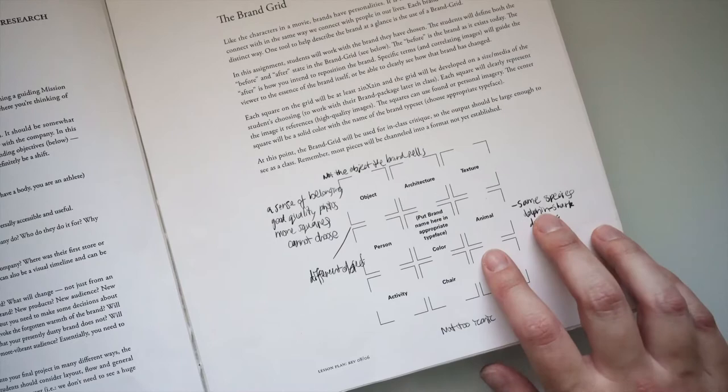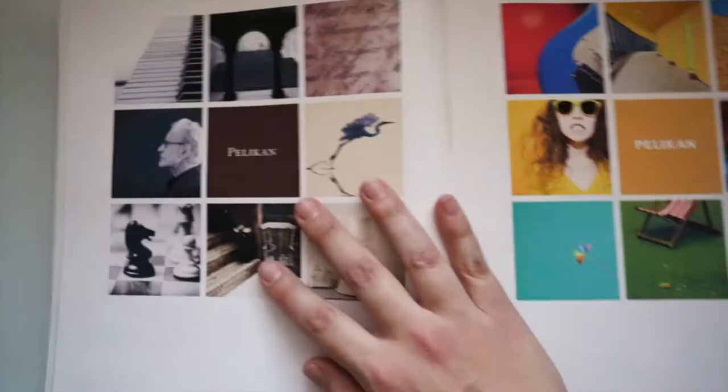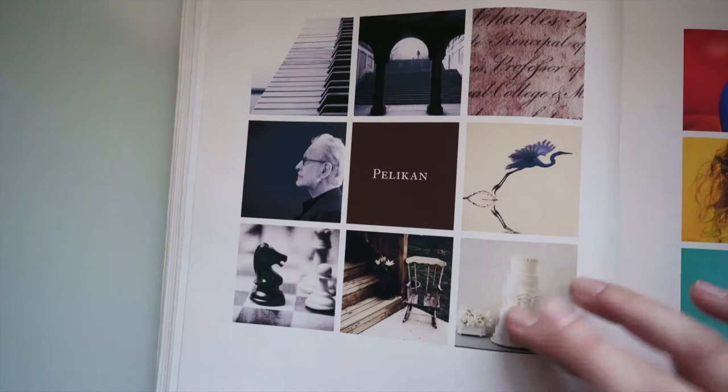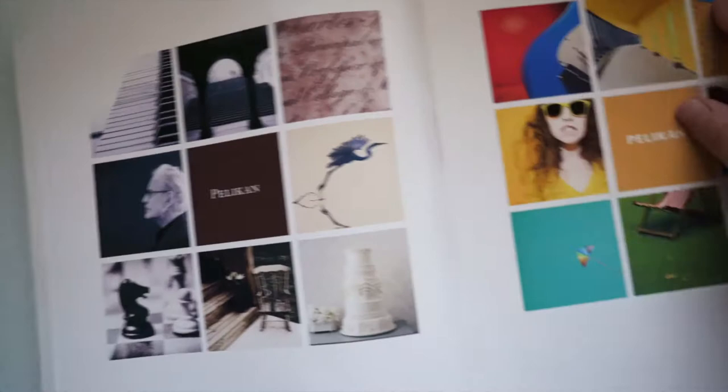So you can see on here on this page these were the nine images. The architecture, the texture, the person, the object, a chair. This is what I felt the Pelican brand was before and then here's where I wanted to take the brand. So something much more colorful and youthful, playful and really attracting a younger audience of artists.